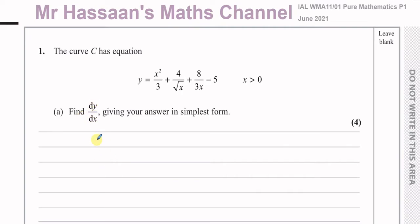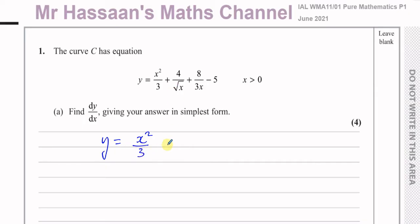In order to differentiate, we should first prepare all the terms to make them easy to differentiate. I'm going to write everything in index form. X squared over 3 is already in index form — it's like a third X squared, so I'll keep it as X squared over 3 for now.